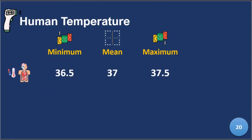Let me give an example with human temperature. The minimum human temperature should be about 36.5, the maximum about 37.5, and the mean is about 37. So when you find in your data something lower than the minimum possible or something higher, you are worried — asking yourself how that can be, whether there is a problem with the measuring equipment or something else.